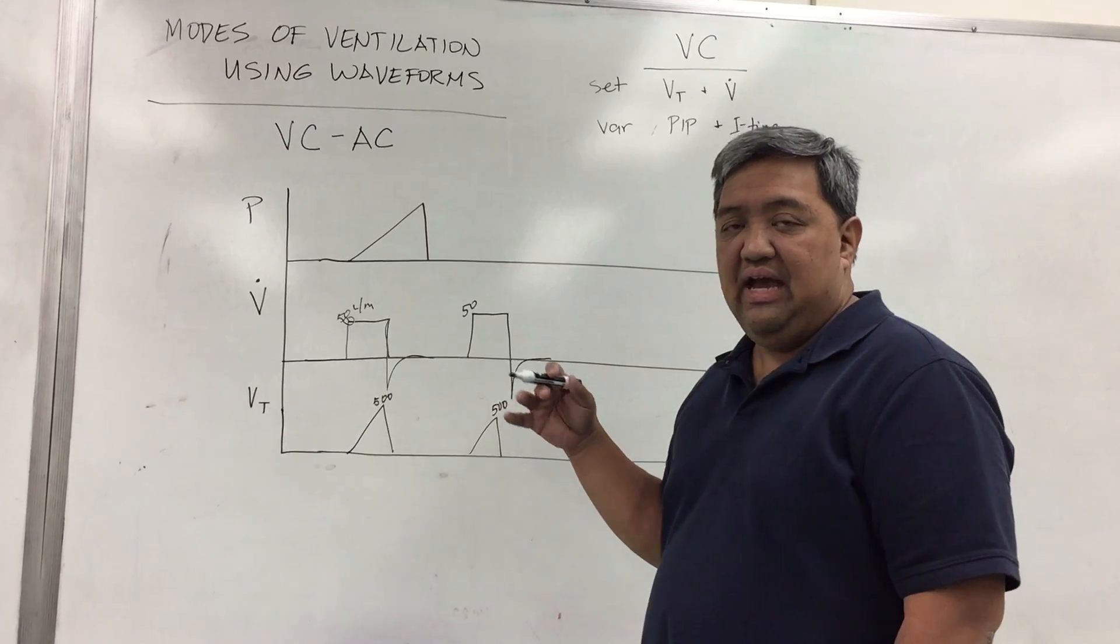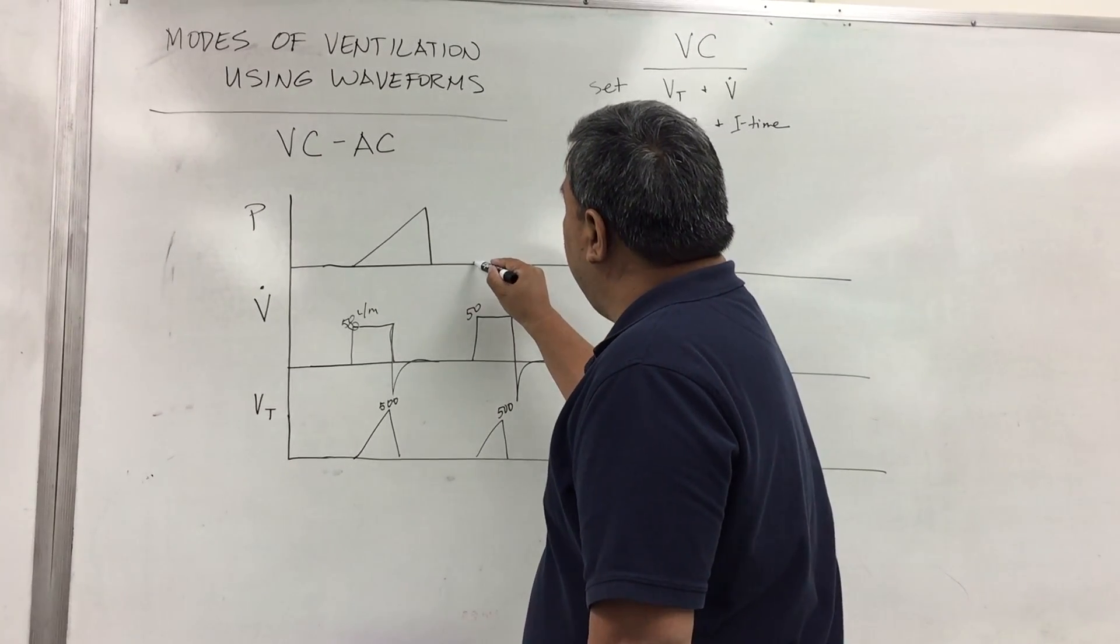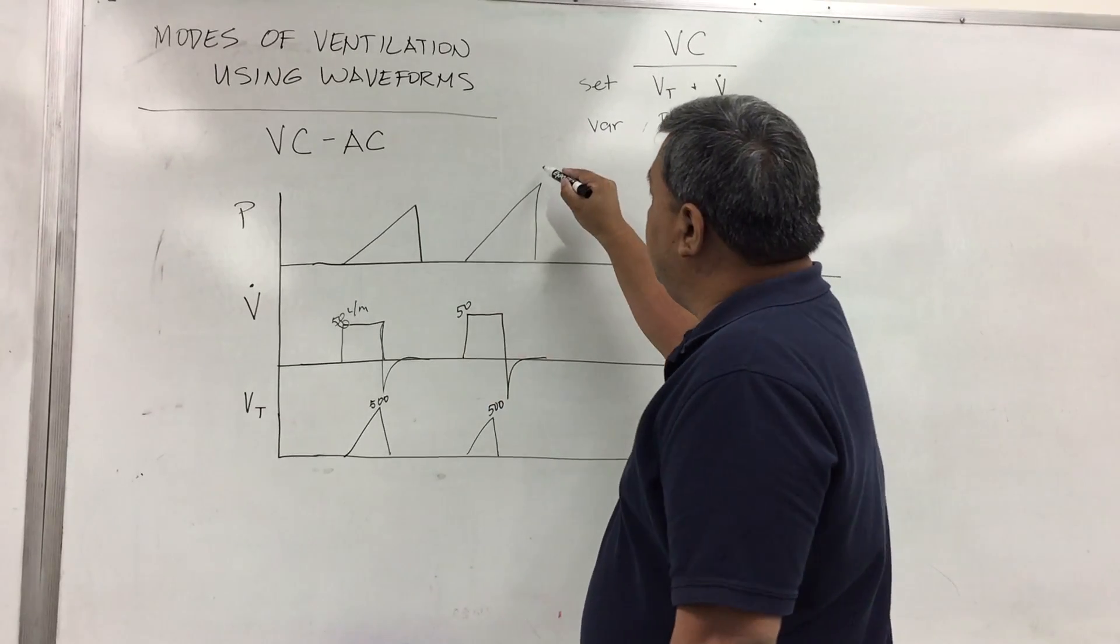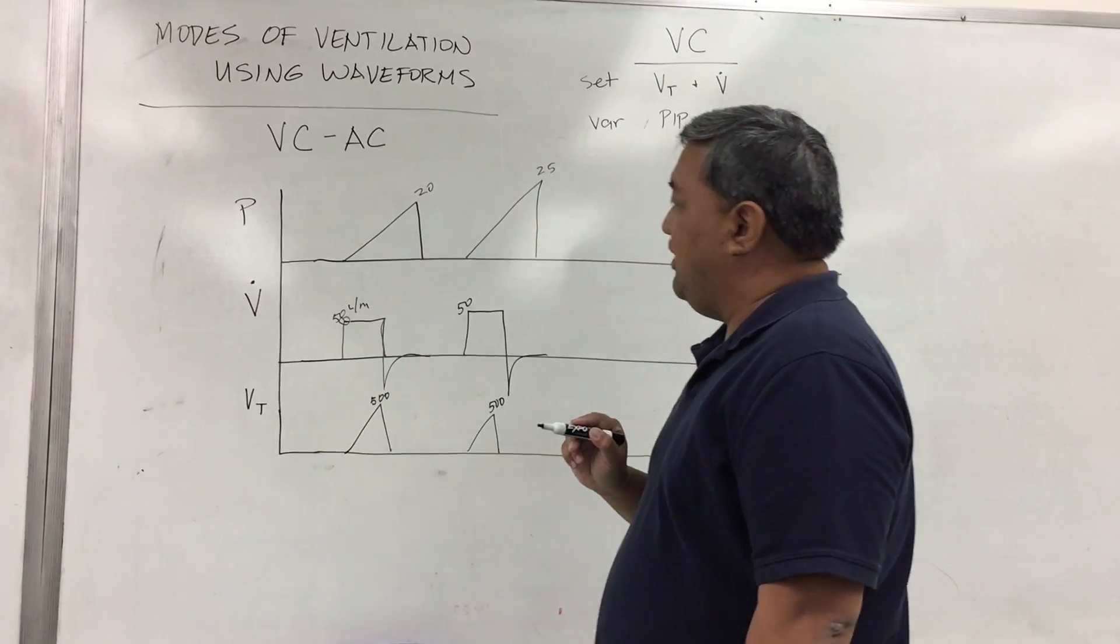However, if the next breath has some sort of resistance or compliance problem, then most likely your pressure may be a little bit higher. In this case, let's say this is 25 and let's say the earlier breath is 20.